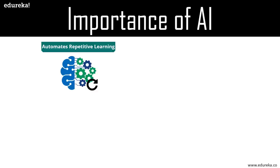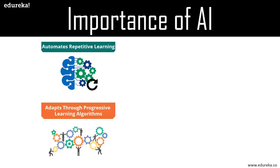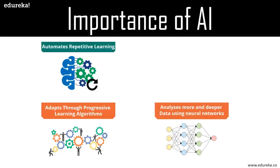Much like the Google Assistant added as a feature to a new generation of mobile phones, AI adapts through progressive learning algorithms to let the data do the programming. The algorithm becomes a classifier or a predictor. Just as the algorithm can teach itself how to play any game, it can teach itself what product to recommend next online.